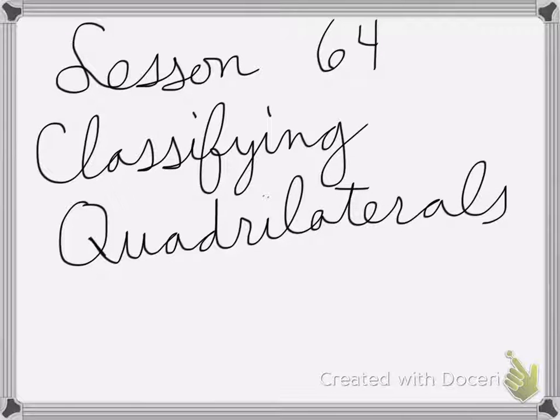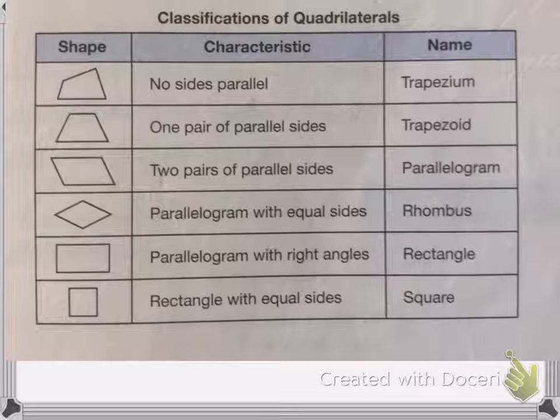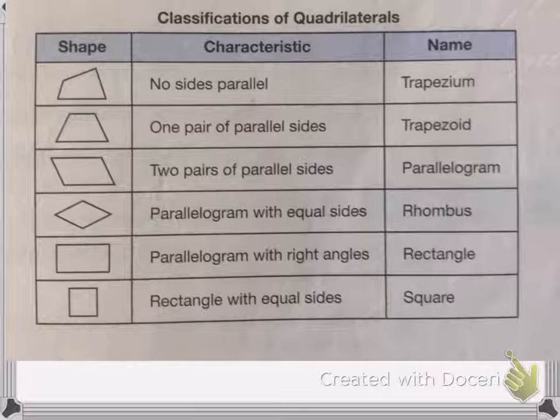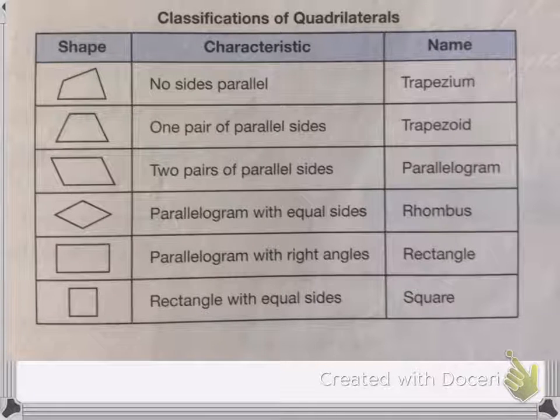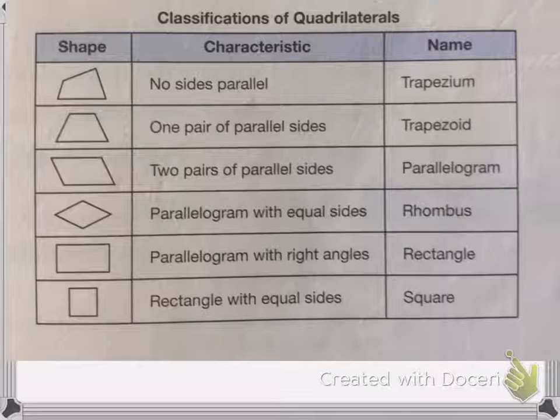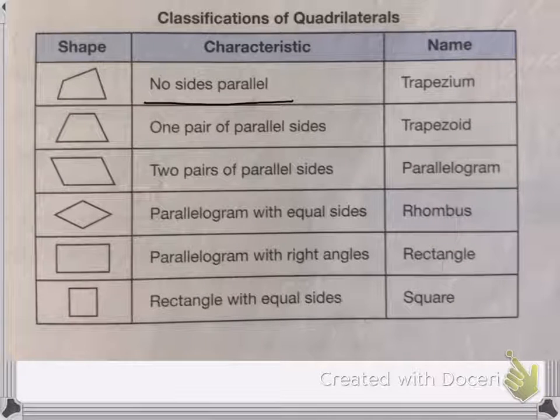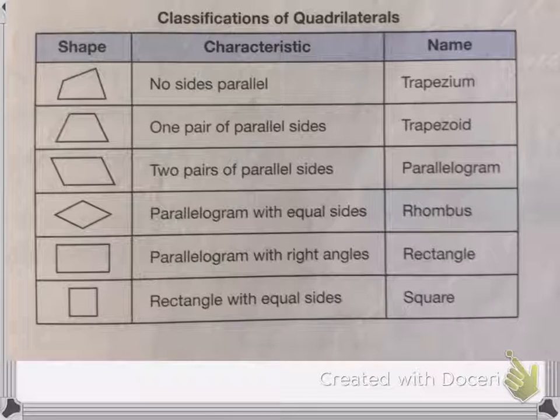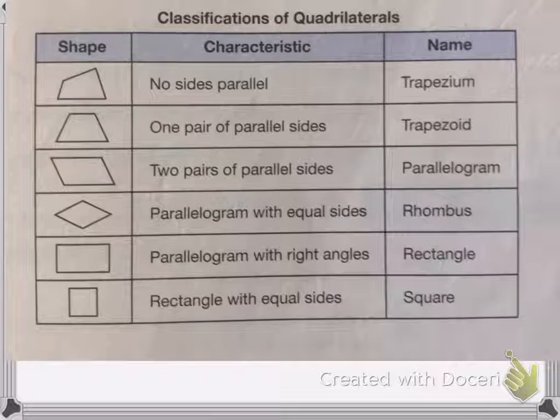Alright, so lesson 64 is on classifying quadrilaterals. As you see, we have various different quadrilaterals, and quadrilaterals are shapes that have four sides. So if the shape has no parallels, it's a trapezium. One pair of parallel sides, trapezoid. Parallelogram, etc.